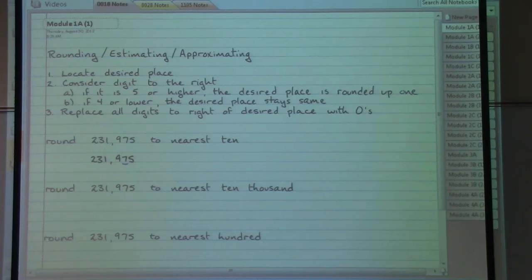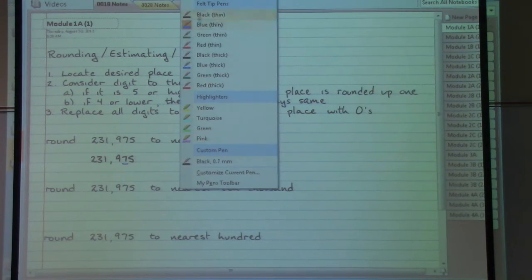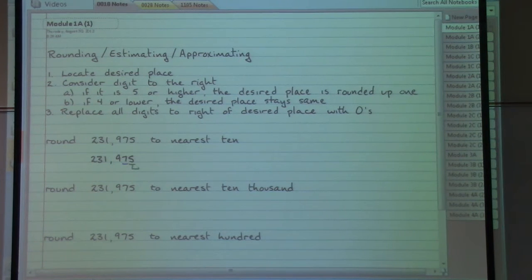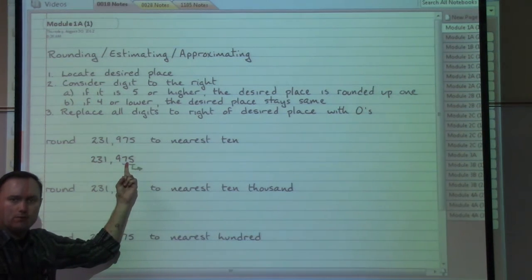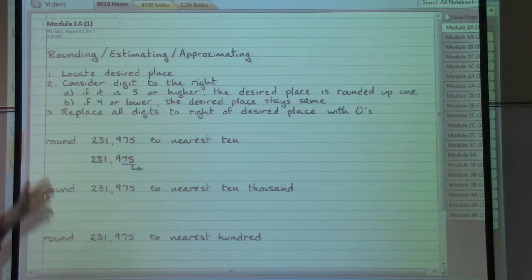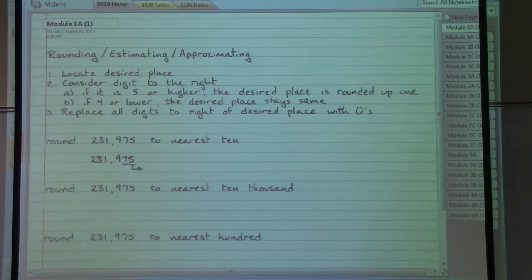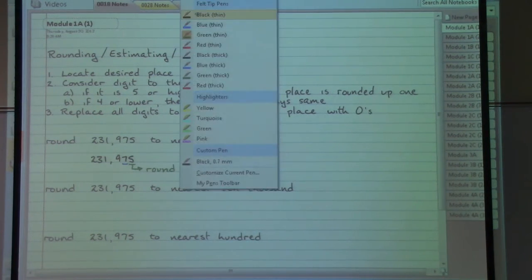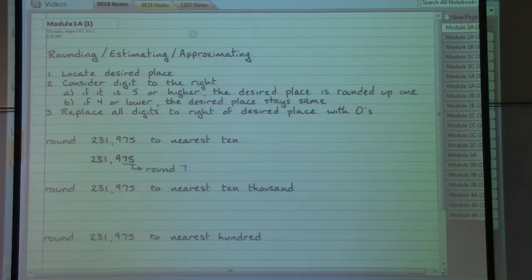Step number two says consider the digit to the right, which means to the right of the seven we have the five. The five is going to control whether we round the seven up or if we keep it the same. Part A: if we have a five or higher, then the desired place is going to be rounded up one. We have a five, so we are going to round the seven up to an eight.